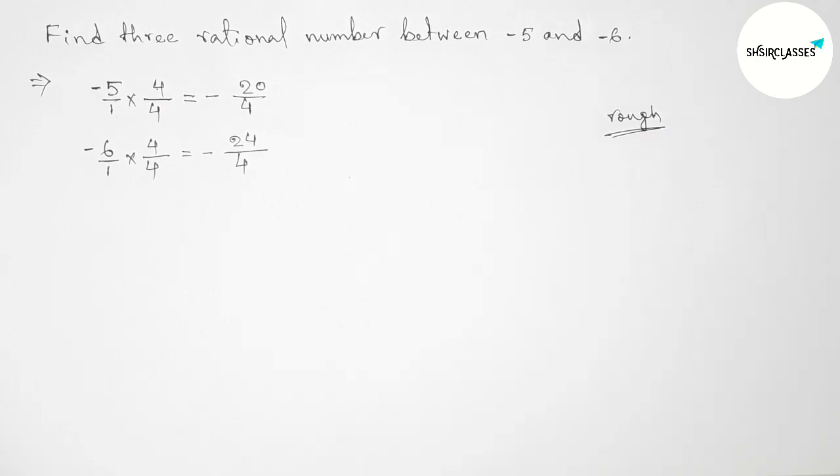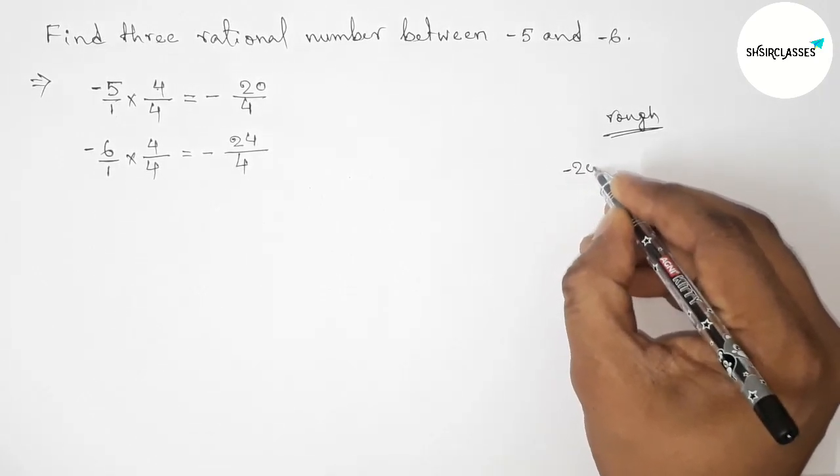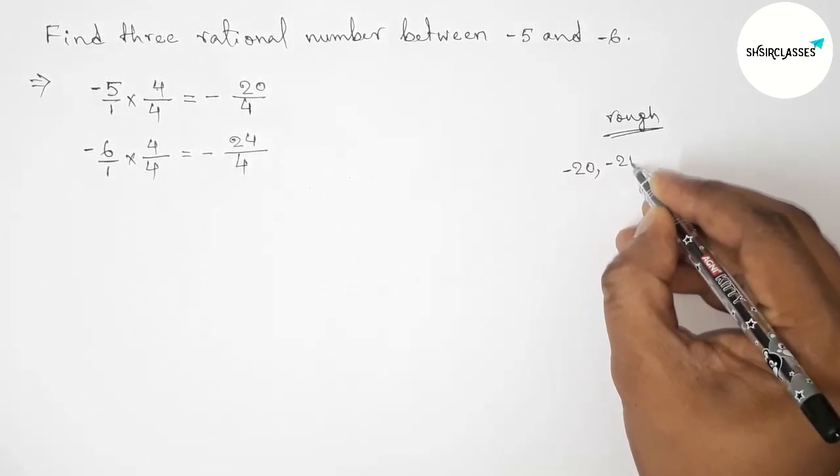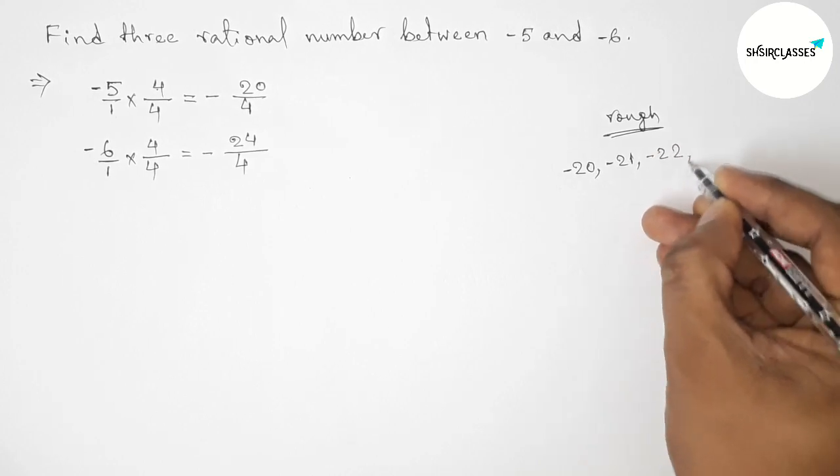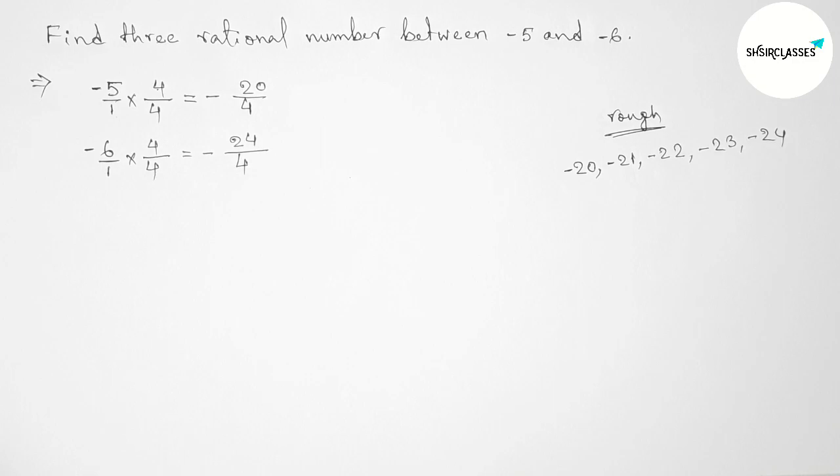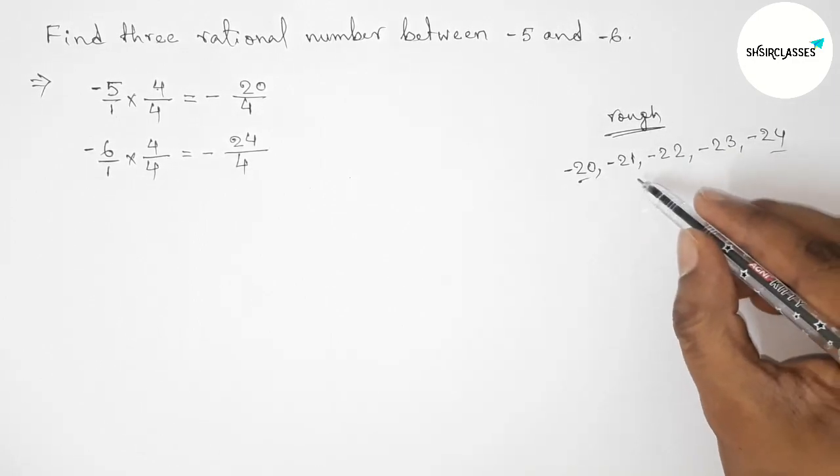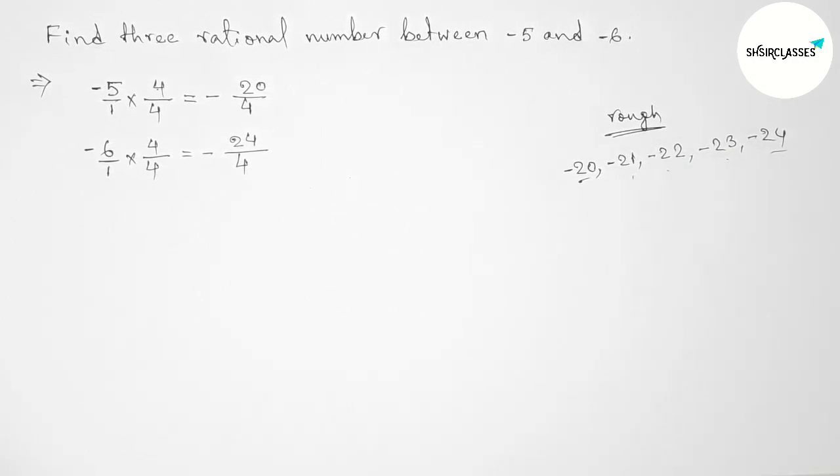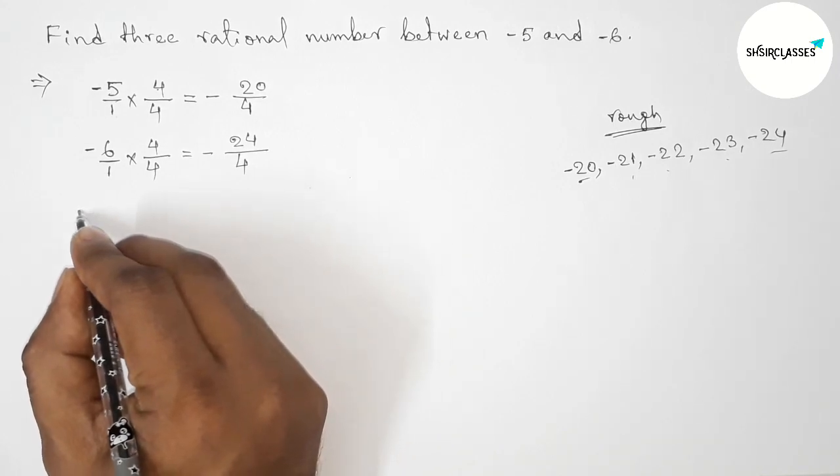Now roughly discussing here some important calculations. Here both the denominators are same, so between minus 20 to minus 24 we can get only three negative integers: that is minus 21, minus 22, minus 23. By these three negative integers we can form three rational numbers.